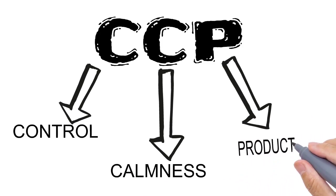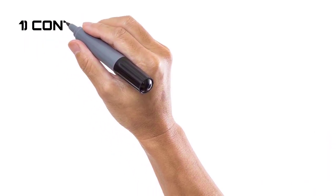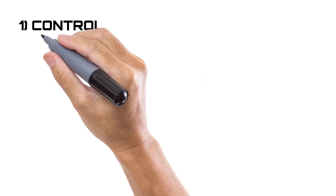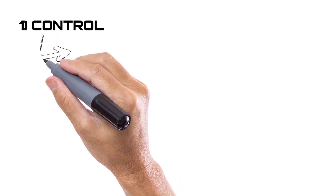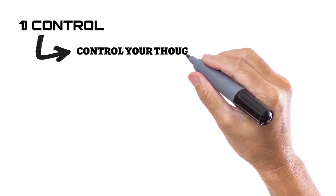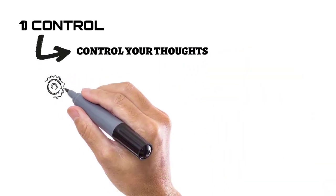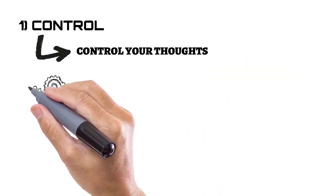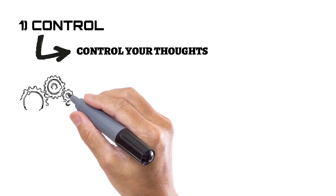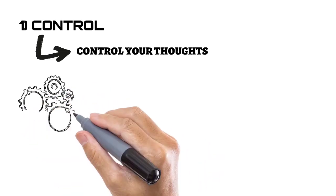First, let's talk about Control. What do we have to control? We have to control our thoughts. Let's take two cases — one of a biscuit factory and another of a human being.